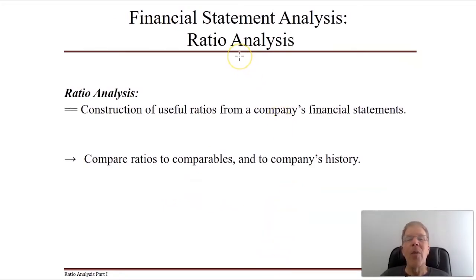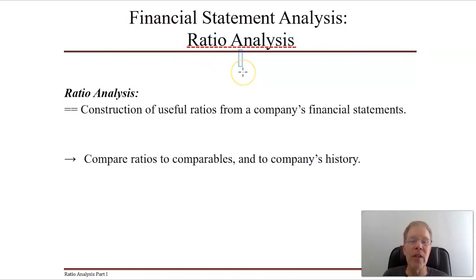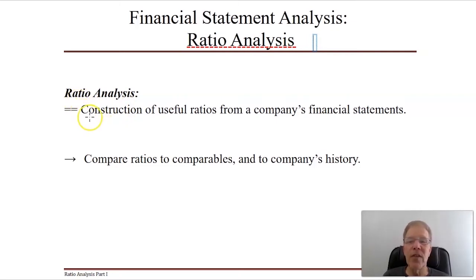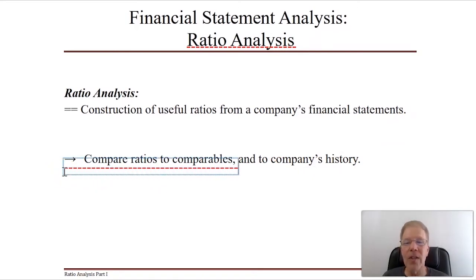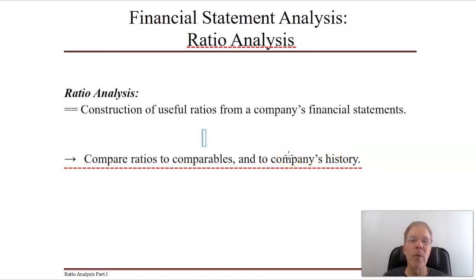To understand the financial performance and health of entities, we look at financial statements and use ratio analysis. Ratio analysis is defined as the building up of useful ratios from a company's financial statements. When we do ratio analysis, we always want to compare a company's ratios versus its comparables — competitors in the same lines of business — and to the company's own history: are sales improving, are profits getting better?